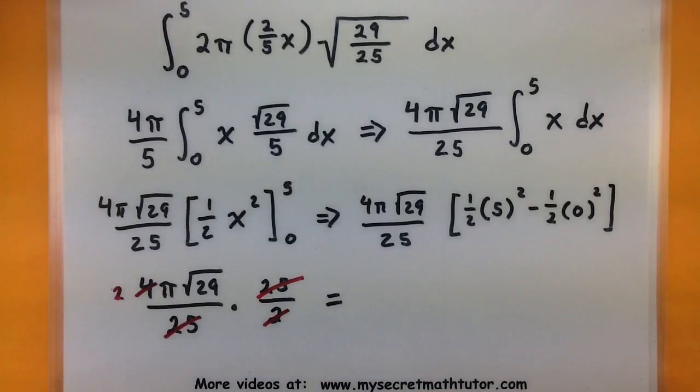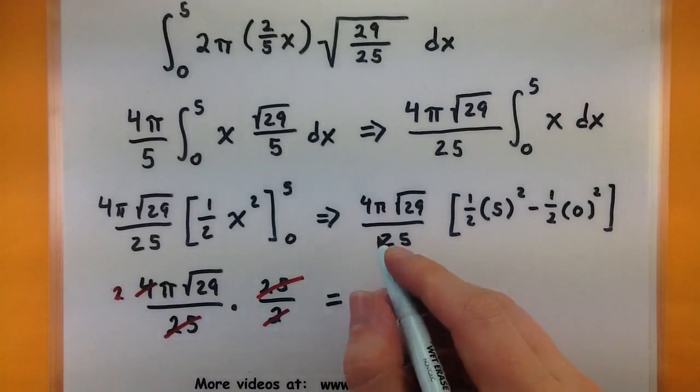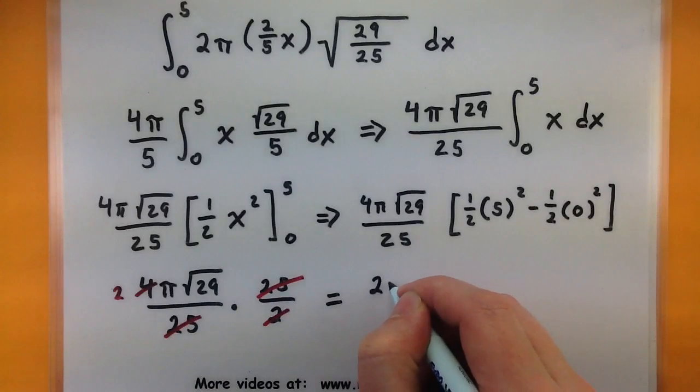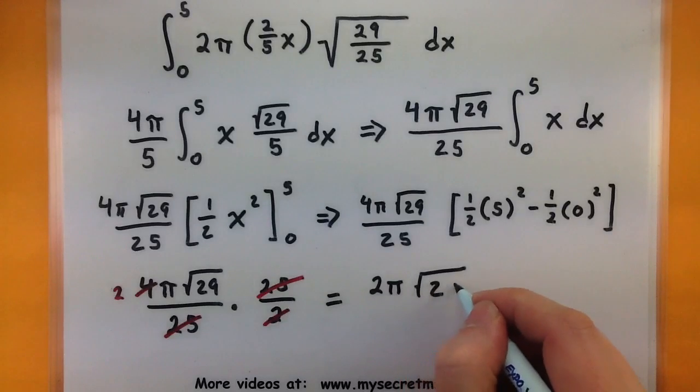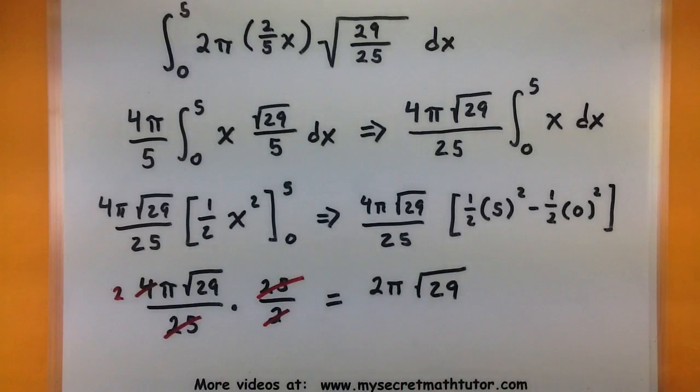So the surface area of this particular function when we rotate it looks like it's two π square root of twenty-nine. So be careful when using the surface area formula. Take note that it has the arc length formula with that square root underneath there, and be careful when simplifying. If you'd like to see some more videos, please visit MySecretMathTutor.com.